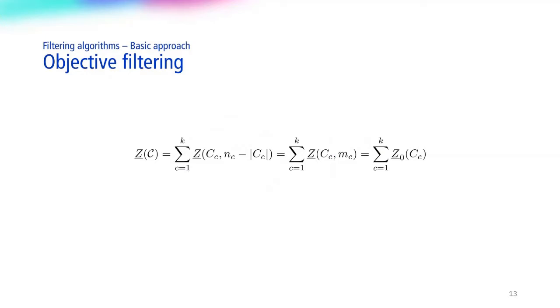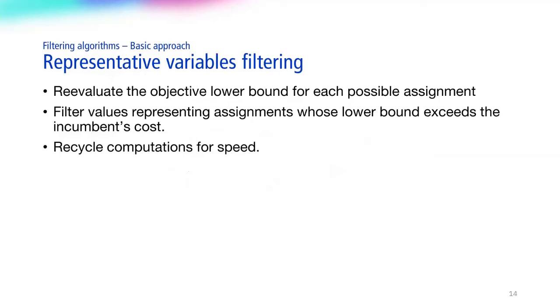Again, using the same logic, we only retain the two unassigned observations whose attached distances are smallest. Combining these assignments necessarily leads to a lower bound on the contribution of the class as we see here. In the basic approach we propose, we compute the lowest contributions of each class independently and then sum them up. This effectively enables the filtering of the objective. Once this is done, it is possible to recycle computations to calculate, in constant time, the lower bound on the cost of each individual assignment.